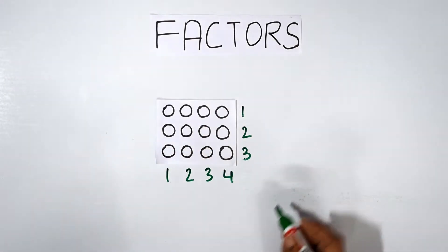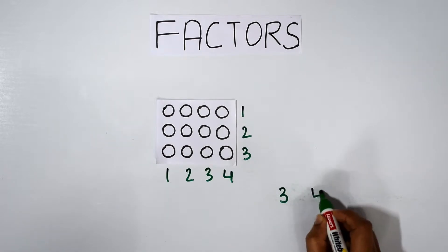This can be written as three rows and four columns, or simply three times four.